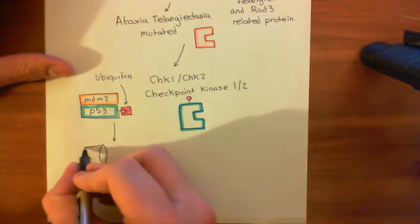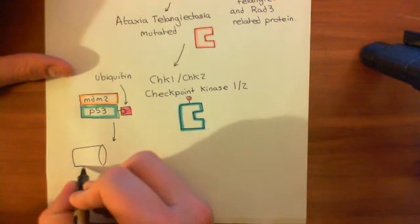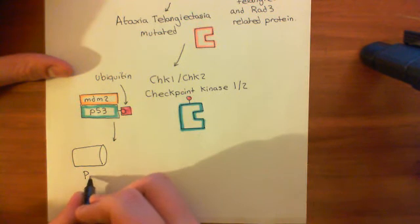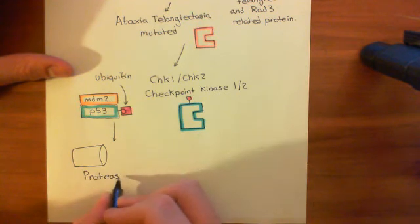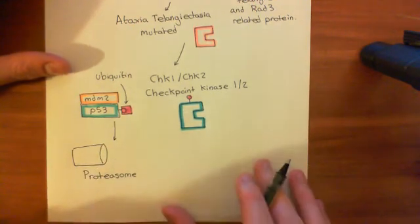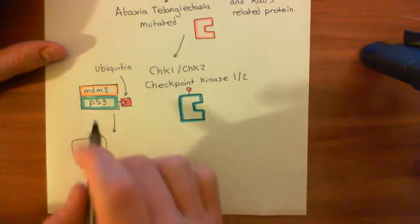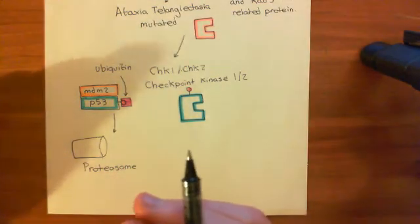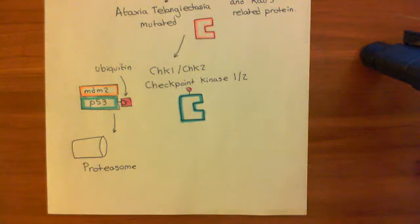So once the MDM2 is bound to the P53, it then helps with the addition of ubiquitin groups. And then this is going to target P53 for destruction by the proteasome. So over here is the proteasome. And the proteasome basically is a machine which breaks proteins down into little fragments of amino acids. So this complex is now going to go into the proteasome. It's going to feed P53, and P53 will gradually unravel as it's being fed in, and it will be chopped into loads of pieces. So that's how you stop P53 from becoming active in a normal resting cell.